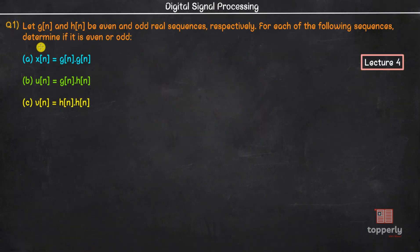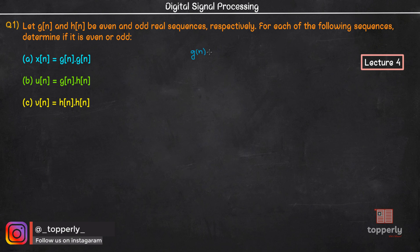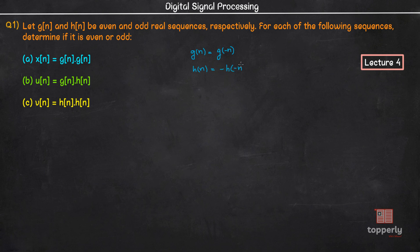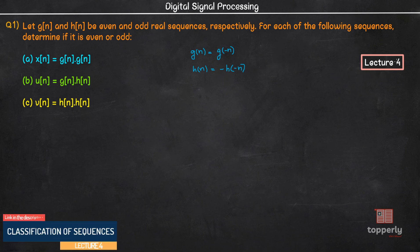The first question is: let g and h be even and odd real sequences respectively. So g is even, which means g(-n) is equal to g(n). Also h is odd, therefore h(-n) is equal to minus of h(n). For those who are unfamiliar with even and odd sequences, please check out lecture 4 of our DSP lecture series where we explain the topic in detail.